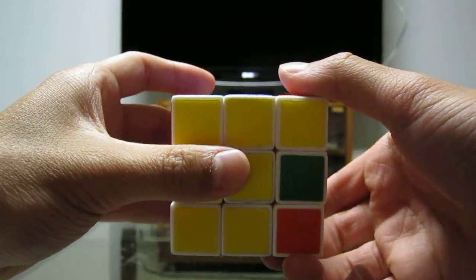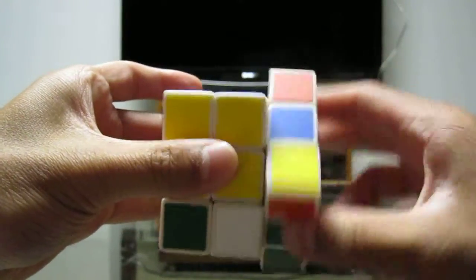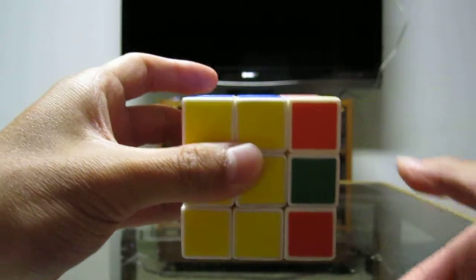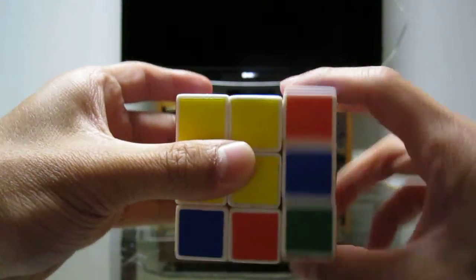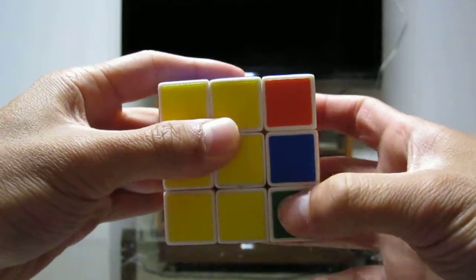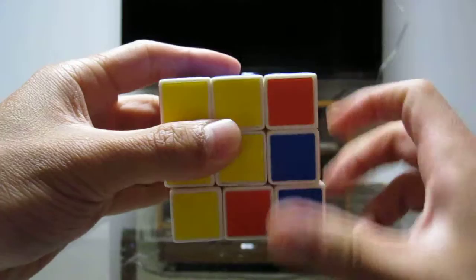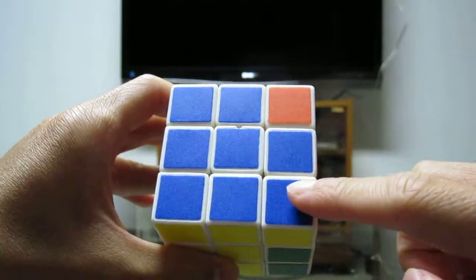So you do the algorithm again. R inverted, down inverted, right down. Again, right inverted, down inverted, right down. Again, right inverted, down inverted, right down. You just brought that corner up here.